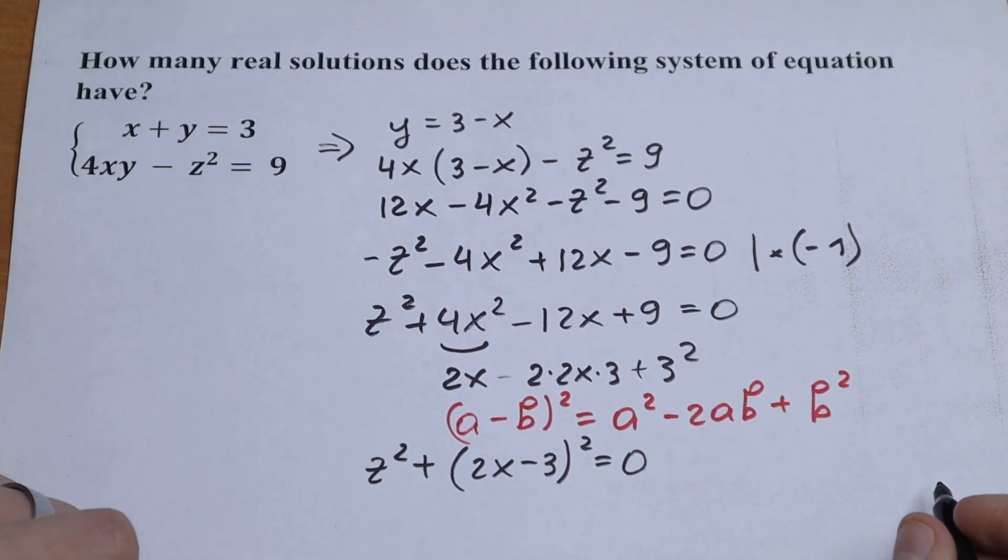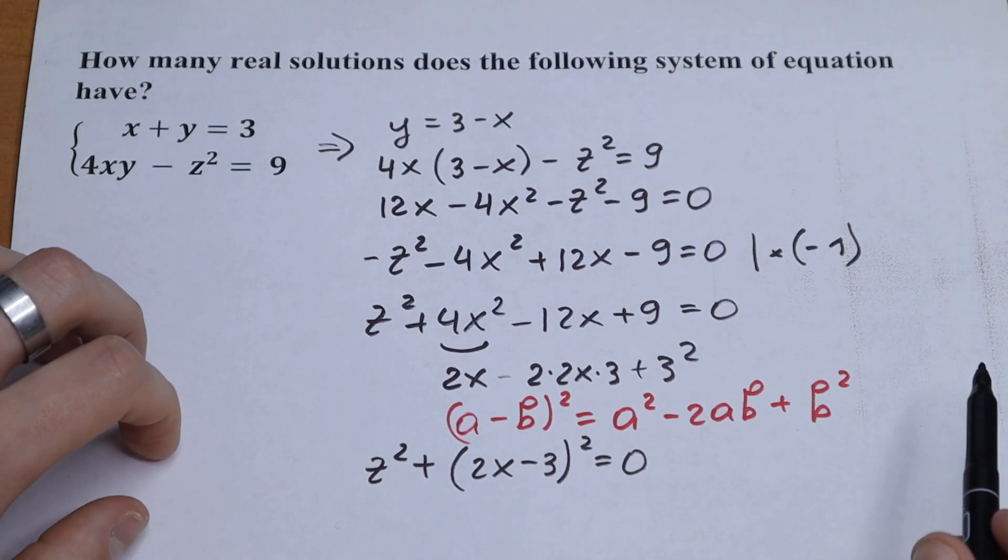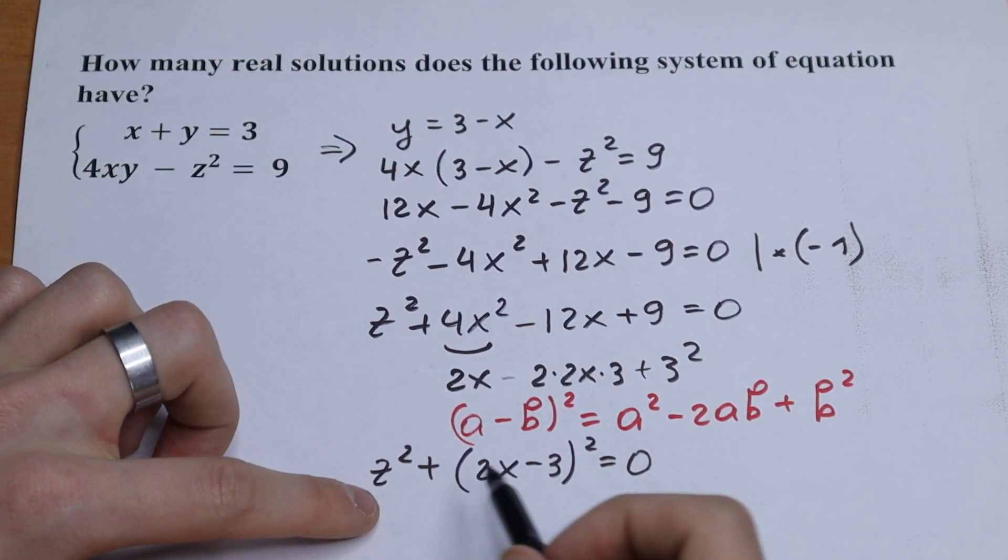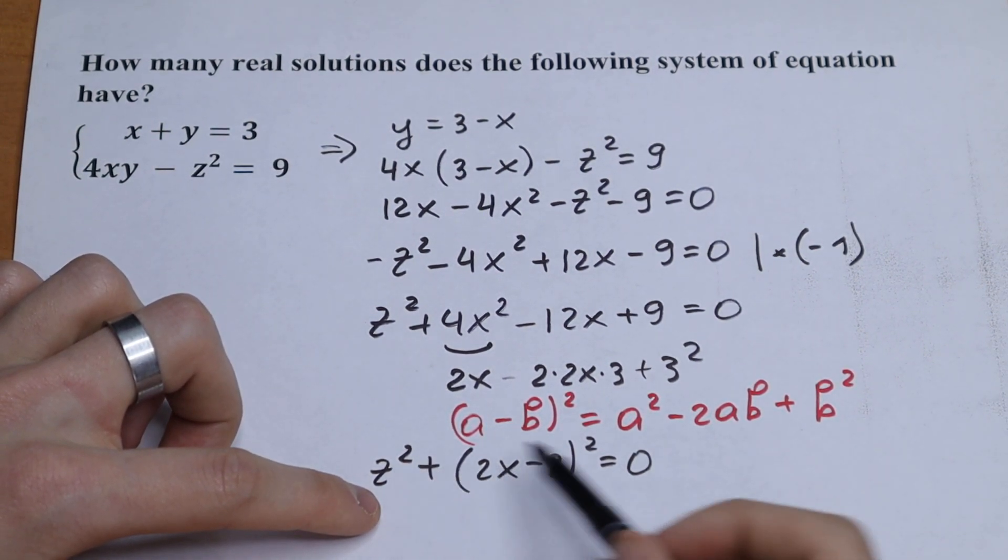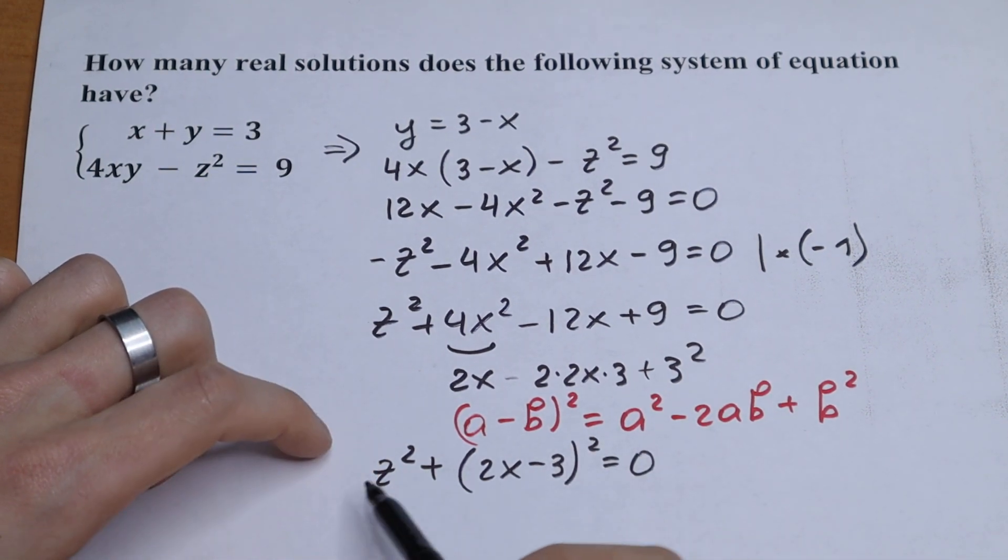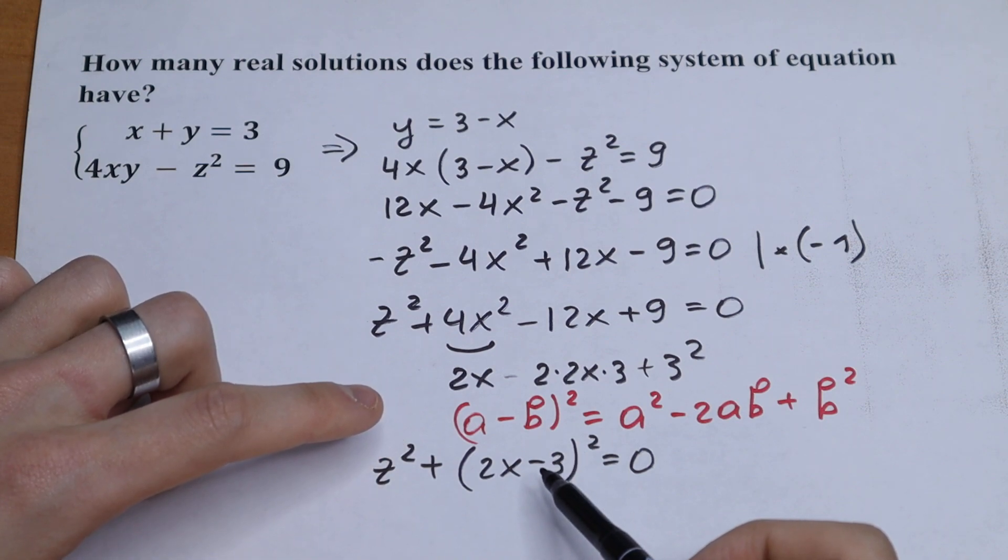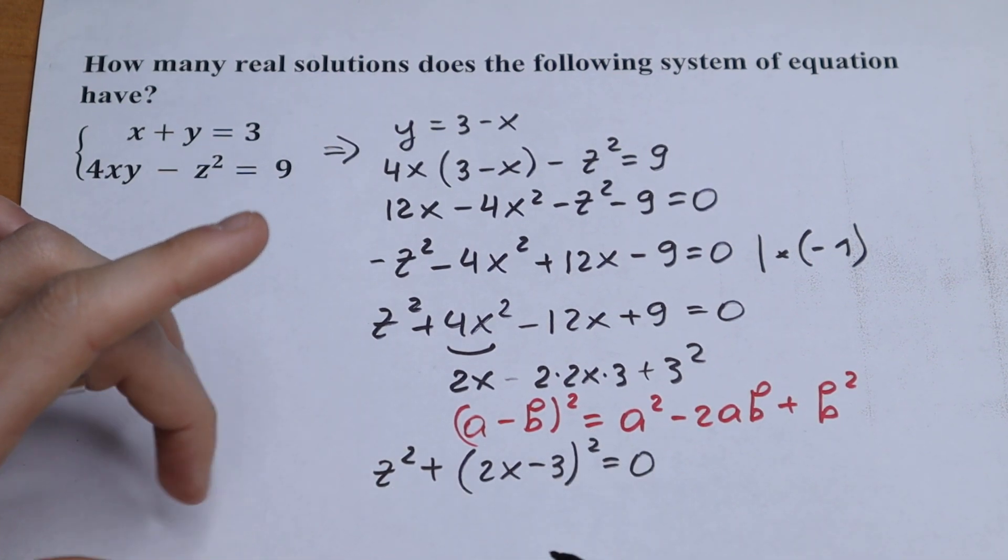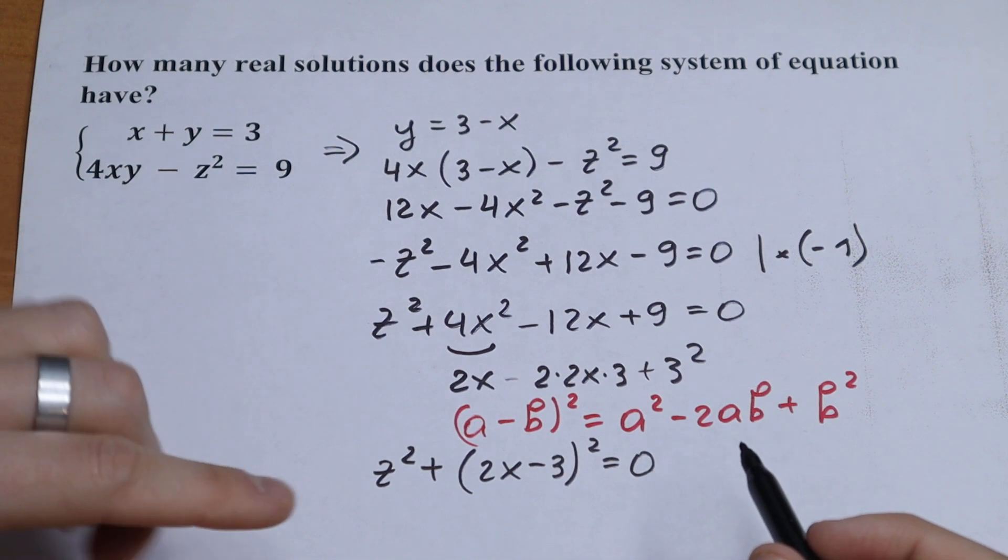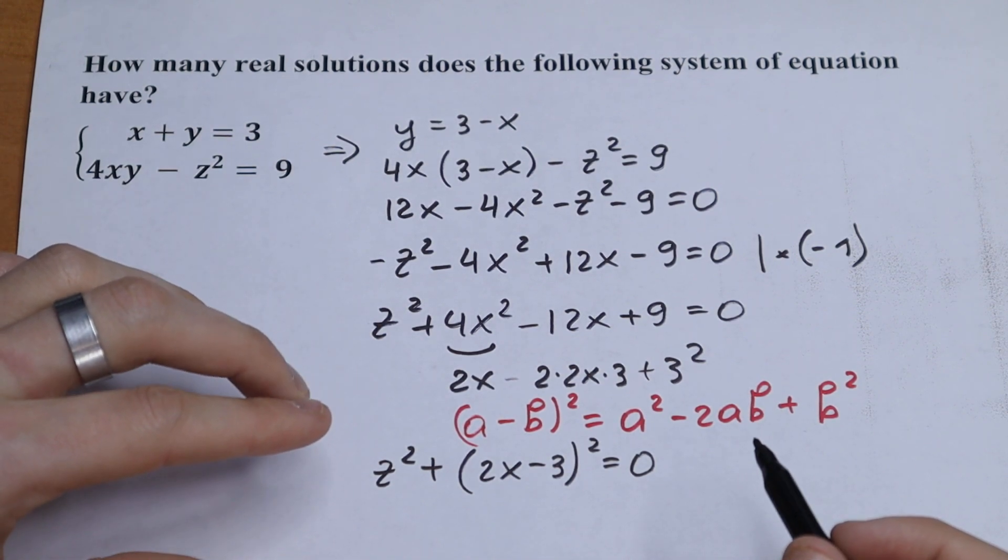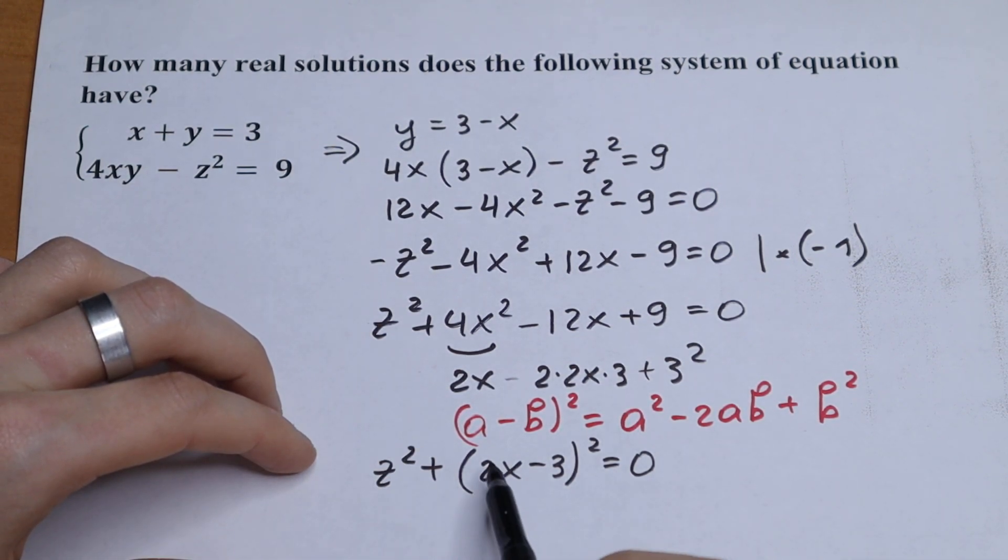We will have z square plus (2x minus 3) square equal to 0. So this is our final equation. But take a look what we can say about this equation. We have two squares, so of course this will be positive and this will be positive as well. So as a result we will have the sum of two positive numbers.